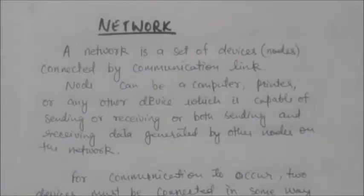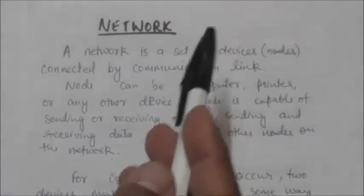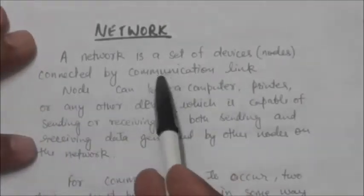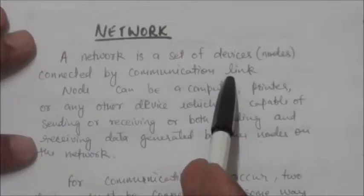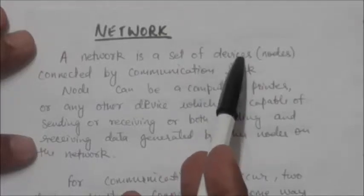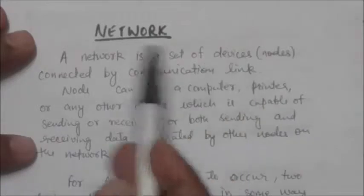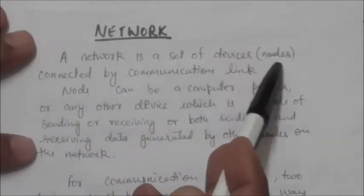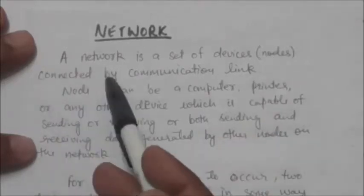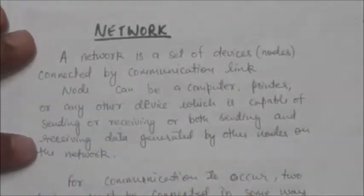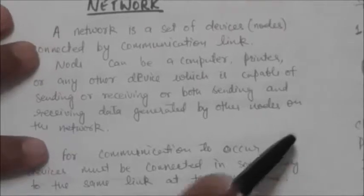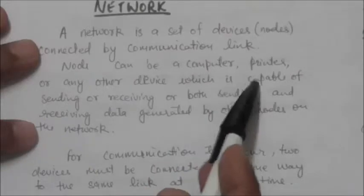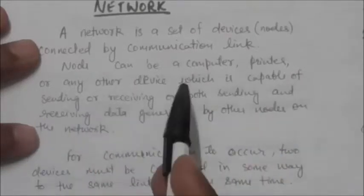Welcome back. In this tutorial we are going to study about networks. A network is a set of devices connected by communication links. These devices are also referred to as nodes. A node can be a computer, printer, or any other device which is capable of sending or receiving, or both sending and receiving, data generated by other nodes on the network.